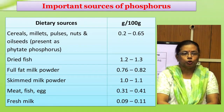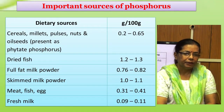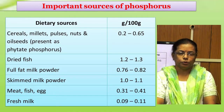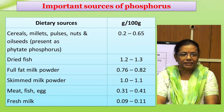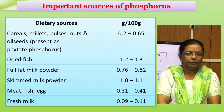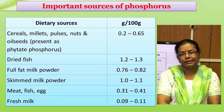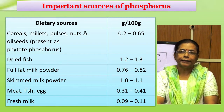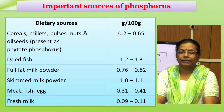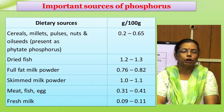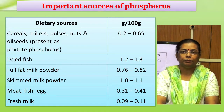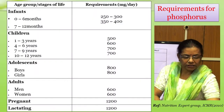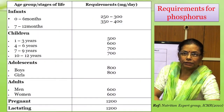Sources of phosphorus: Meat, fish, egg, and milk are important sources. Phosphorus is also present in cereals, millets, pulses, and oilseeds. Some seeds contain phosphorus in the form of phytic acid, which is not available for absorption. The requirement of phosphorus is the same as that of calcium.